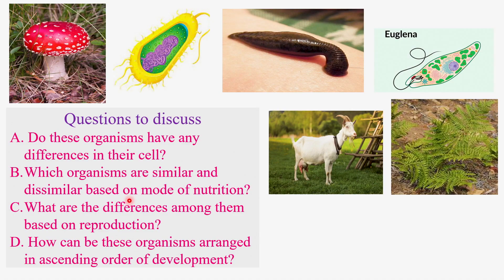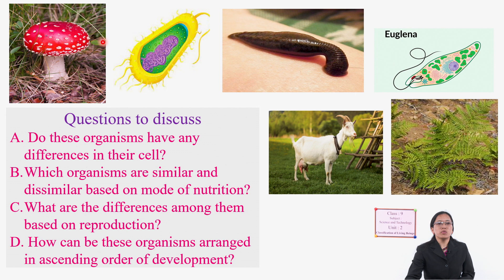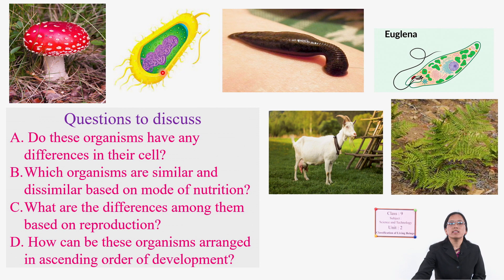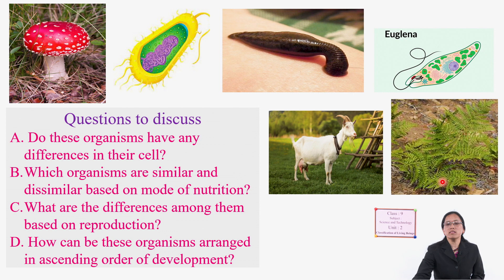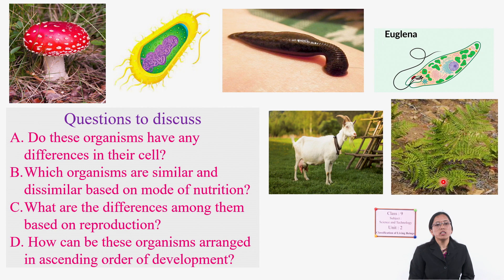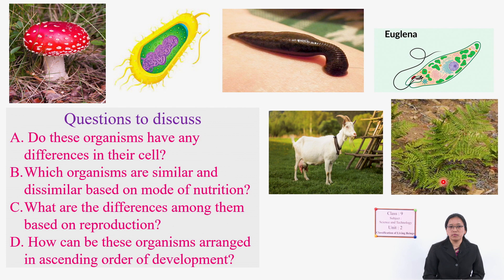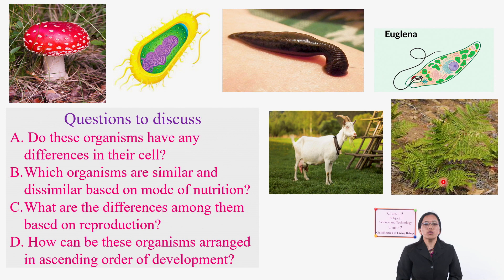All of you observe this slide. There are different pictures and some questions given here. The first picture is mushroom, second is bacteria, third is leech, fourth is euglena, fifth is goat, and sixth is fern plant. Question number A: do these organisms have any differences in their cell? We have learned about different types of cells in class 8 — prokaryotic cell and eukaryotic cell.